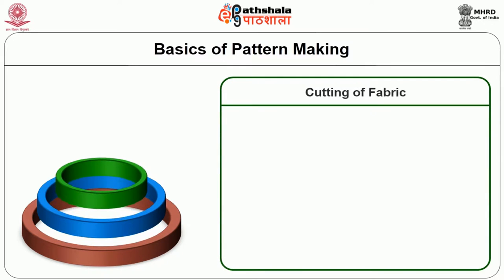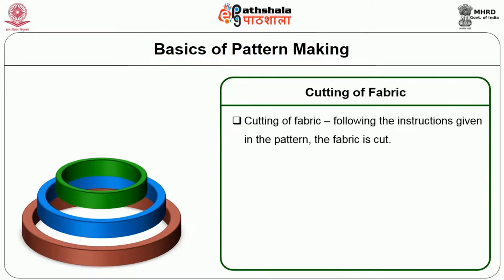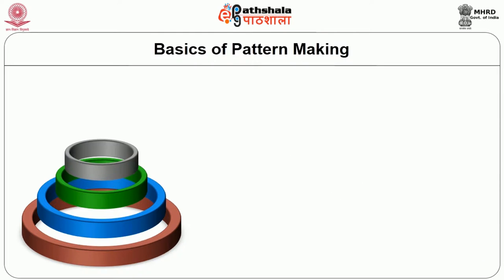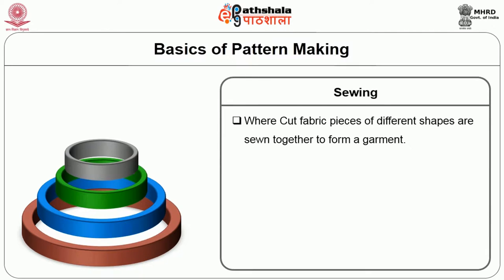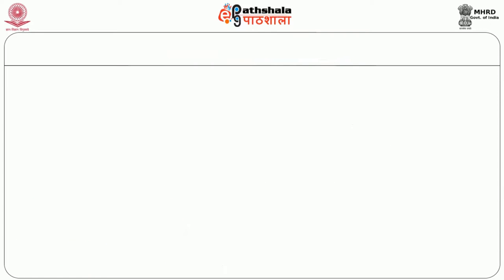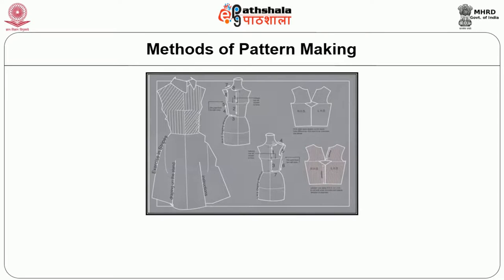The third stage is cutting of fabric. Following the instructions given in the pattern, the fabric is cut. The cut pieces may vary from one to many — perhaps 10, 15 or even 20 pieces for one single garment. The last stage is sewing, where cut pieces of fabric of different shapes are sewn together to form a garment, such as joining front and back at the shoulder, attaching the sleeve to the body block, and stitching collars to the neckline.